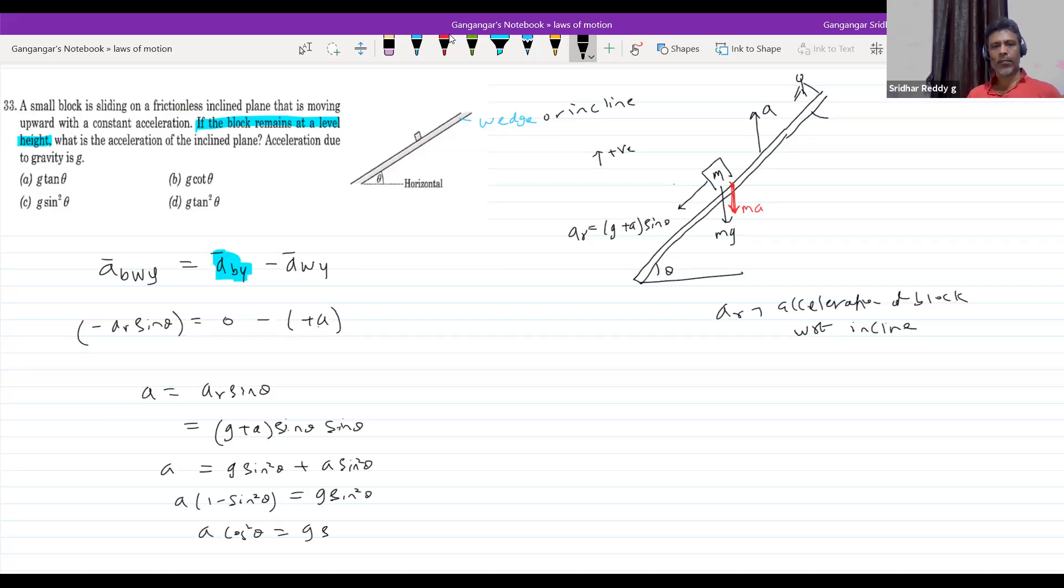Cos square theta. Therefore, finally, what is the a? It is equal to g tan square theta. This is very important.